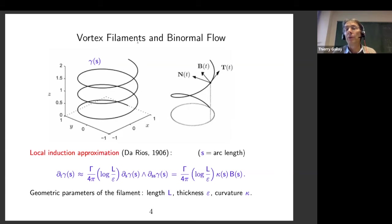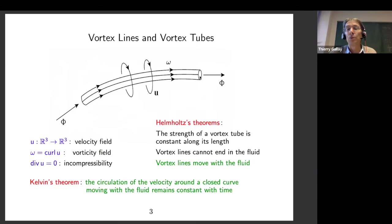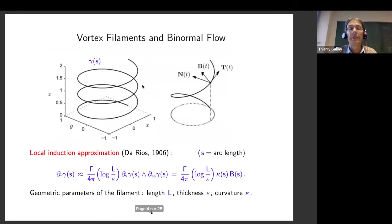It is complicated in general to determine the motion of a vortex tube. But there is a singular limit in which you have a local evolution equation: the case where the tube becomes very thin and degenerates into a vortex filament. A vortex filament is a very thin vortex tube — you send the diameter of the tube to zero but assume that the flux does not go to zero. At the limit you obtain a singular object, something like a Dirac mass supported by a curve.